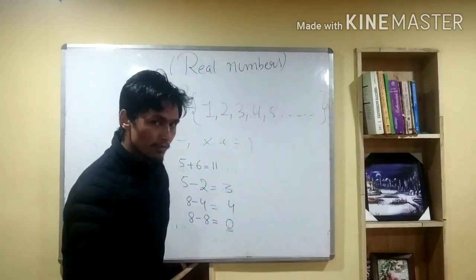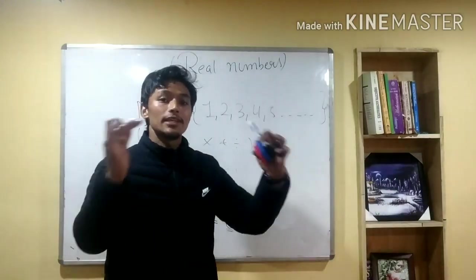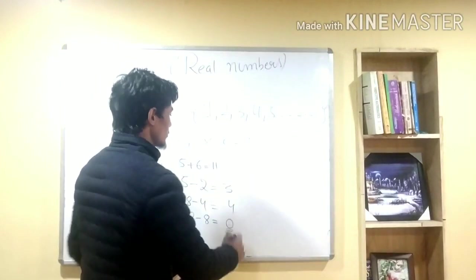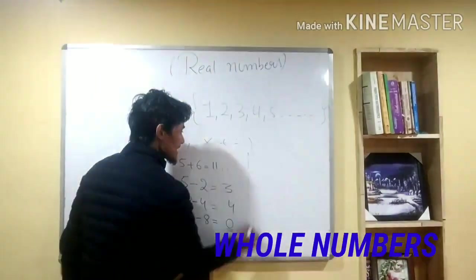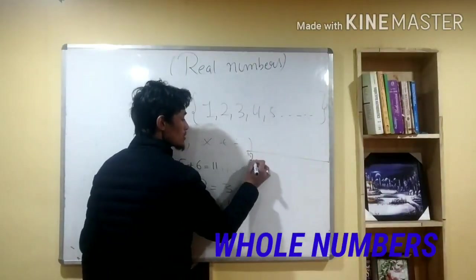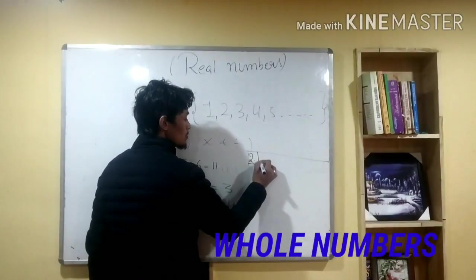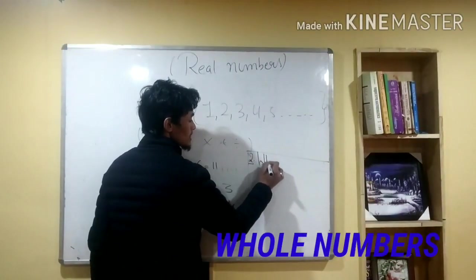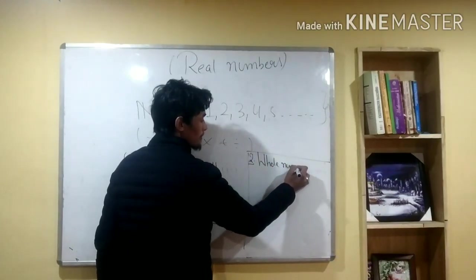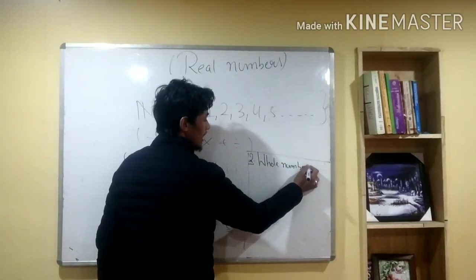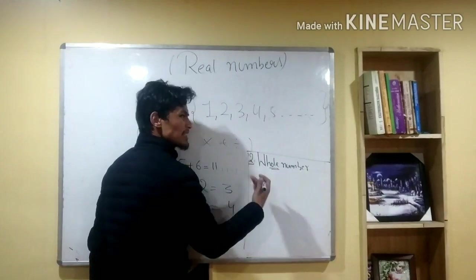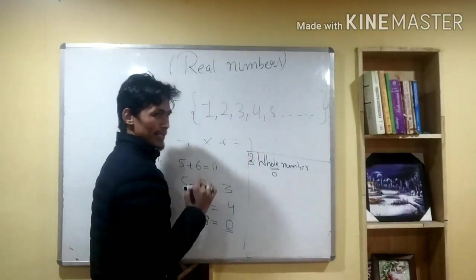So the whole number includes the natural numbers plus zero. The whole number system is denoted as W-H-O-L-E N-U-M-B-E-R. So the whole number starts from 0.